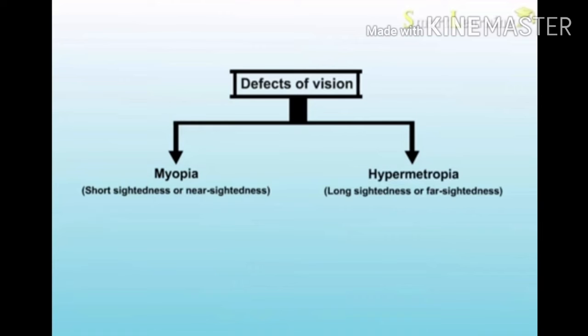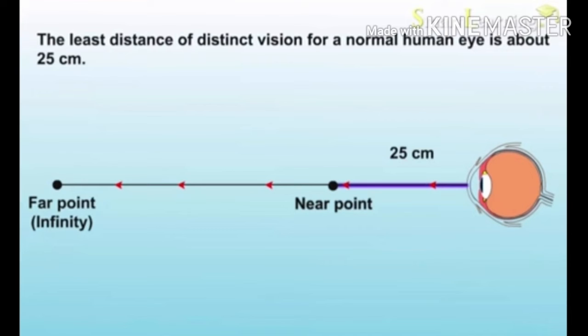A person affected by presbyopia has both myopia and hypermetropia. So in power of accommodation, we discussed about the least distance of eye vision. The least distance of distinct vision for a normal human eye is about 25 centimeters.